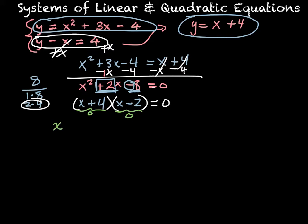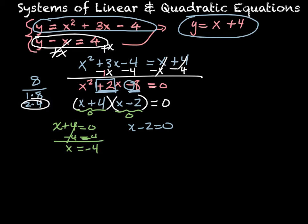So I'm going to set each one equal to 0. I have x plus 4 equals 0, and I have x minus 2 equals 0, and I just solve. So I subtract the 4 over, leaving me with x equals negative 4. Then I add the 2 over, so x equals positive 2.